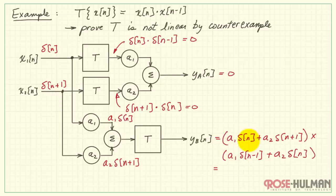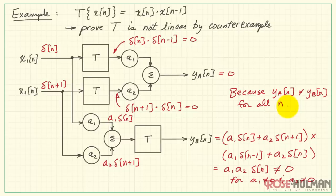When we multiply through, we note that delta of n multiplies delta of n at some point. But all the other cross terms always involve delta functions that are shifted with respect to each other, and so they always produce 0. Delta of n times delta of n is still 1, or still a delta function, rather. Therefore, at n equals 0, we see a non-zero result. Therefore, these are not equal, and we have to conclude that the system T is not linear.